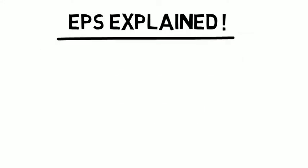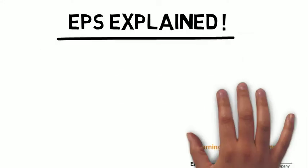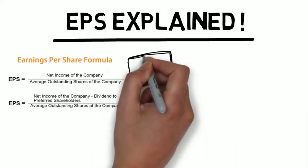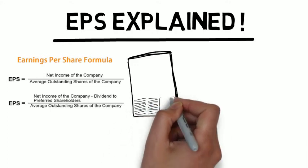Basically all it is is the net income of a company divided by their total shares outstanding. And what this number does for you is it gives you a little bit of information on how profitable a company is.